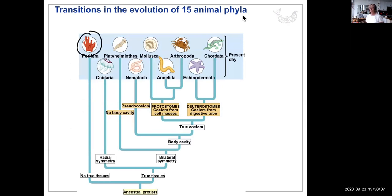The more I look at sponges, the more I think they're like a colony of cells, but they are considered a multicellular animal. They have no true tissues — no muscle tissue, no organs — they just kind of work like a colony.